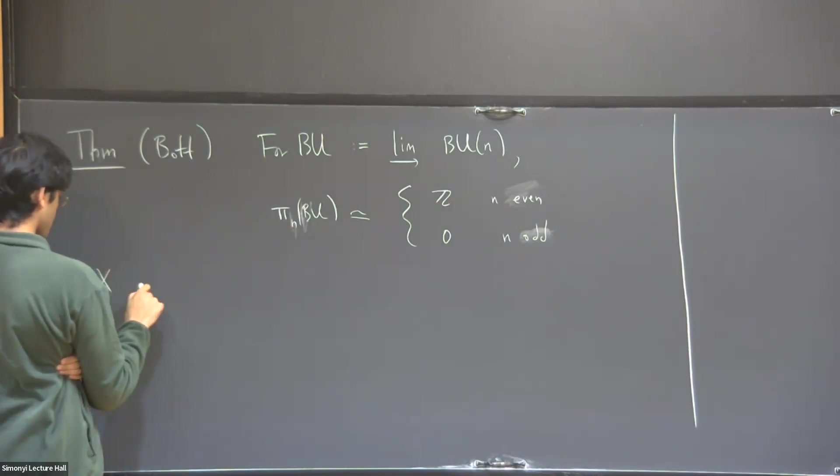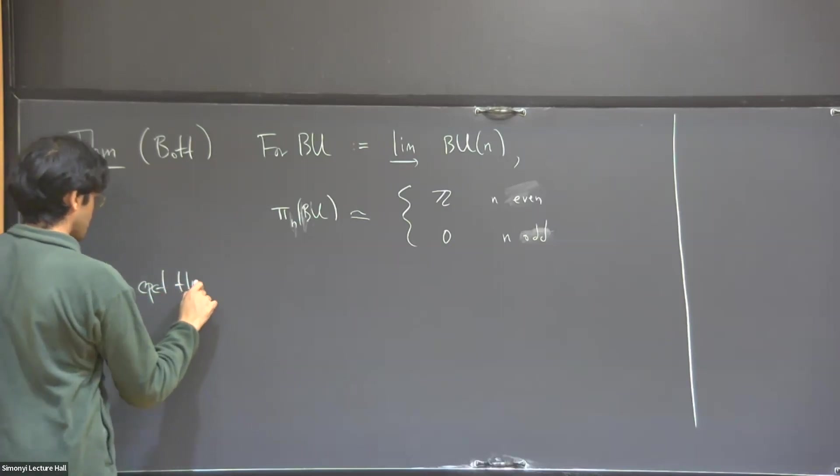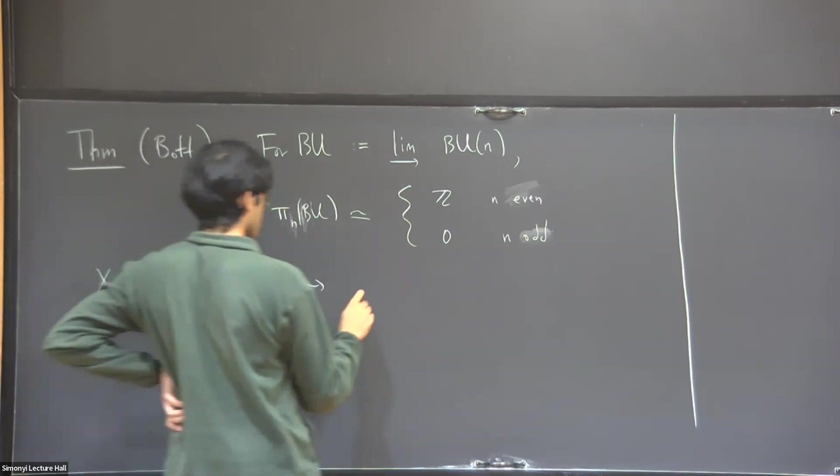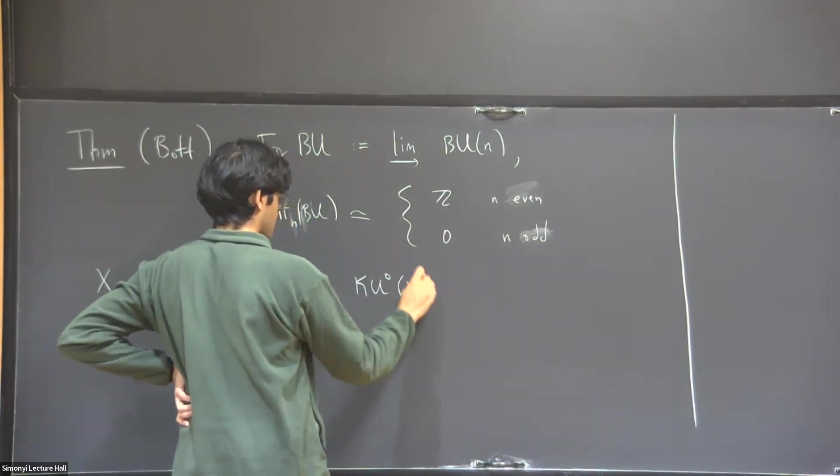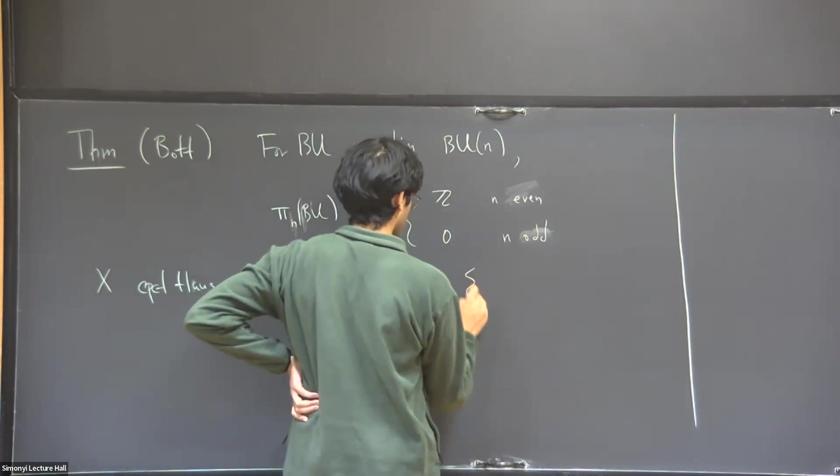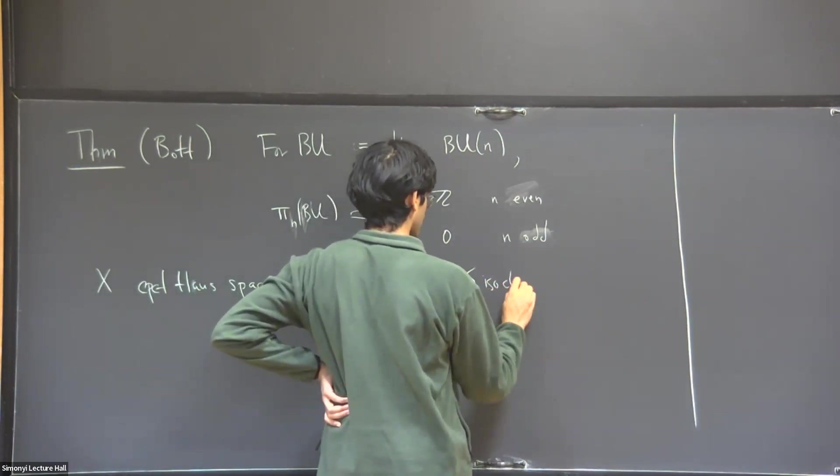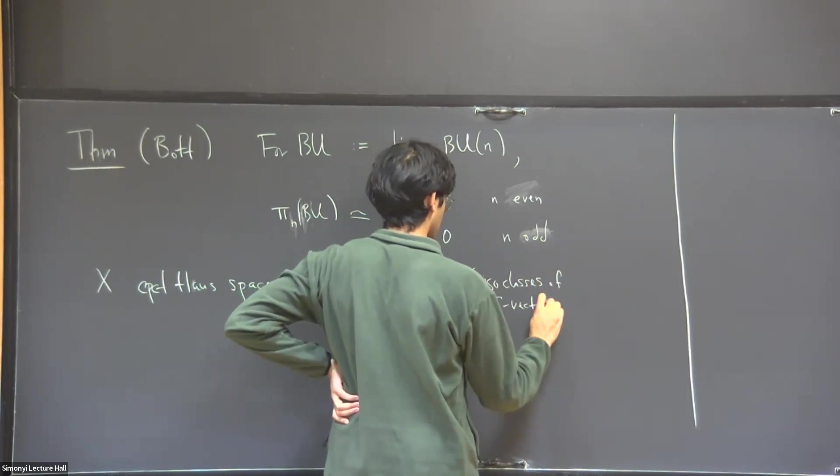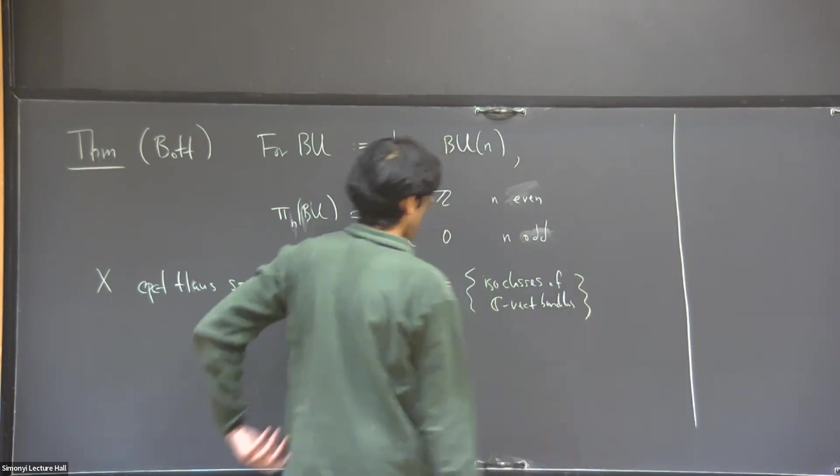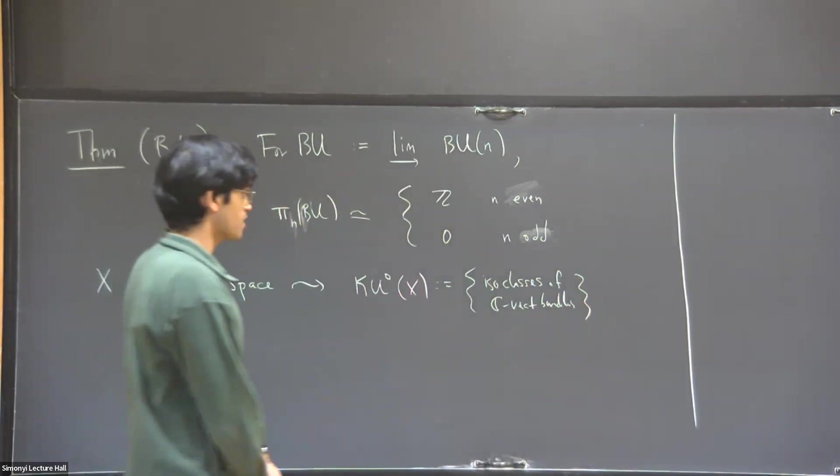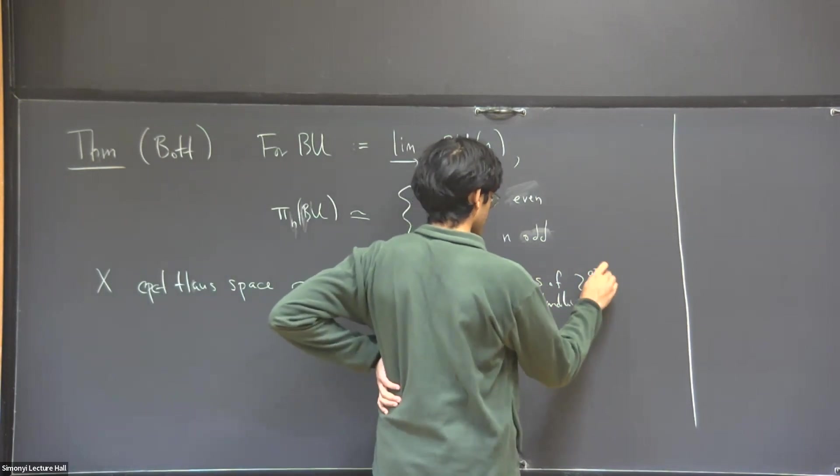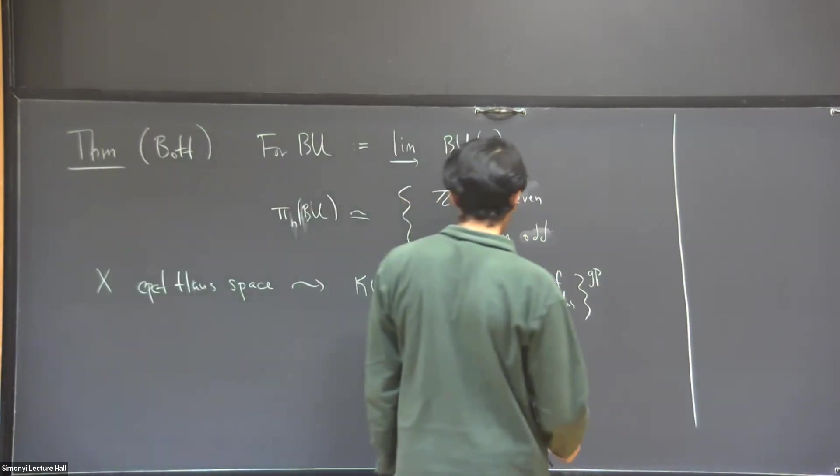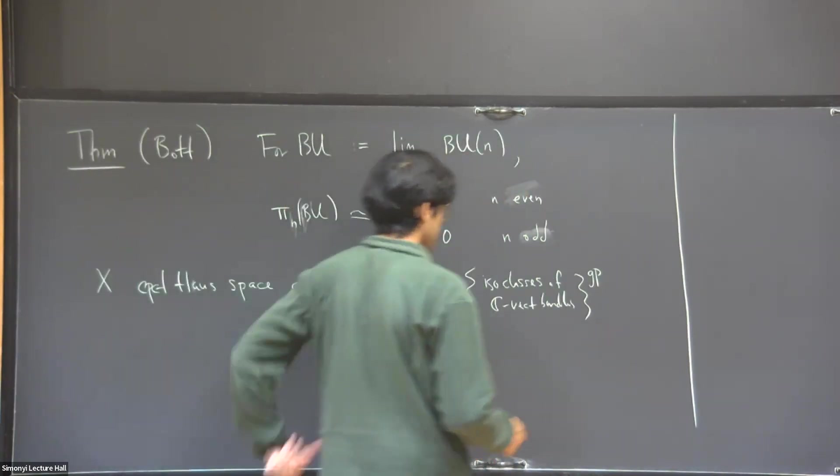This tells you something about complex K-theory. Let me remind you that if X is a compact Hausdorff space, then I can associate to it something I'll write as KU^0 of X. That's what I get when I start with a set of isomorphism classes of complex vector bundles. That has an addition operation given by direct sum, and I can group complete this. I informally add additive inverses to that monoid. That's what the complex K-group of this space is.